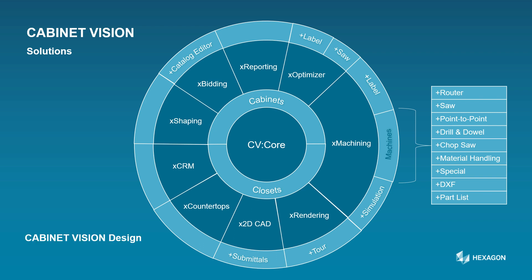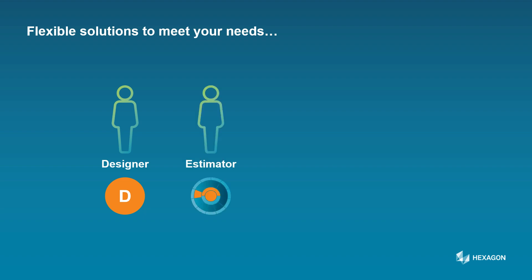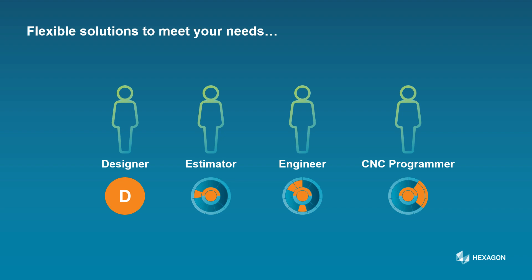CabinetVision Design is another product in the CabinetVision portfolio and is an excellent solution for kitchen designers who do not want or need the overhead and complexity of manufacturing data. With CabinetVision, we can create custom-tailored licenses for not just your business, but each individual employee in your business based specifically upon the tasks that they perform. For example, your designer would only need the CabinetVision Design product. The estimator may only need core cabinets plus the bidding multiplier. The engineer might need core cabinets plus the 2D CAD, shaping, and reporting multipliers. And finally, your CNC programmer would probably only need core cabinets, the machining multiplier, and a router addition. CabinetVision gives you the flexibility to have a perfectly tailored solution for each person in your business.